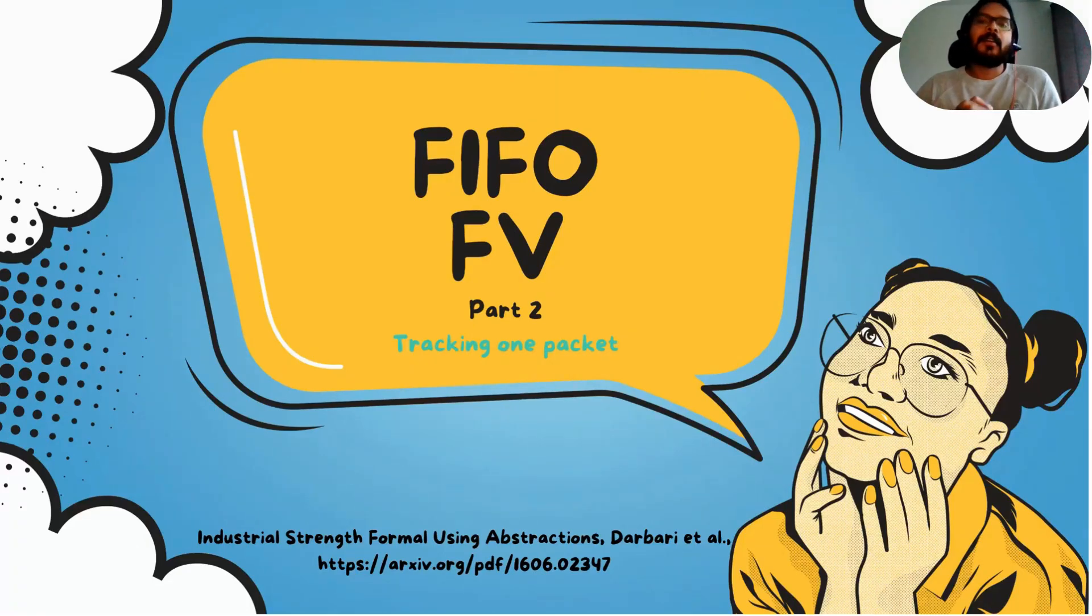Hello and welcome back. If you are diving into the world of digital design, you've probably encountered the nifty storage structure called FIFO - first in, first out. Mastering the art of verifying their correctness using formal methods is a nice skill to have. In my last video, I broke down a method where we used formal methods to track two arbitrary entries in the FIFO. Today, I will discuss a more efficient approach by tracking just one entry.